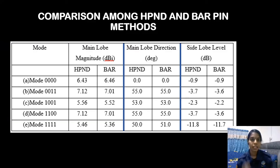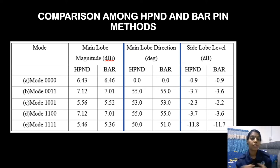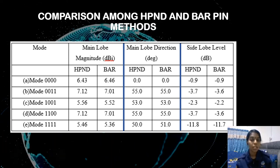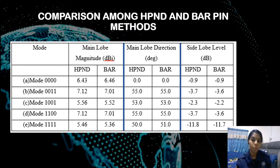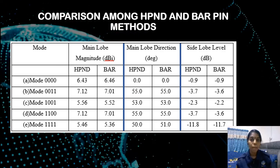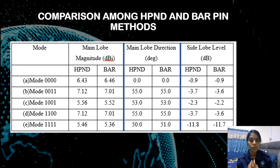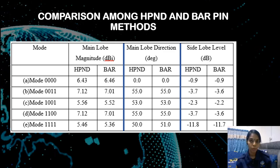Finally, the table shows a comparison of main lobe direction, main lobe magnitude, and side lobe level for different BAR PIN diodes and HP and D diodes. From here we can choose the BAR PIN diode, as the difference is not much compared to the HP and D diode. Using this type of PIN diode could save cost for the switching mode.